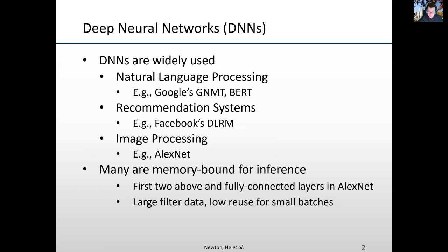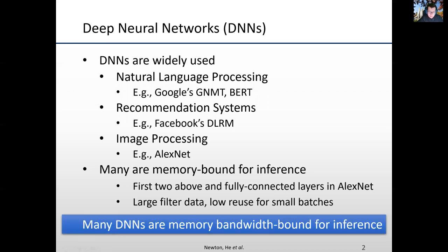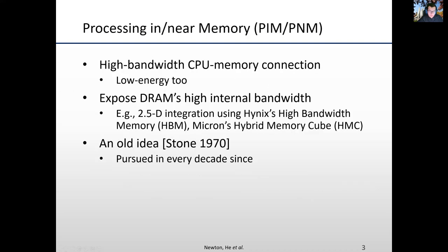The inference of a neural network with small batch size is typically bounded by memory bandwidth. Due to the lack of batching, the large filters in neural networks have only small reuse. The convolutional layers in AlexNet and ResNet are compute-bounded and are not a target for PIM. Only the fully connected layers are memory-bounded, and filters in those layers have low locality at inference with small batch size.